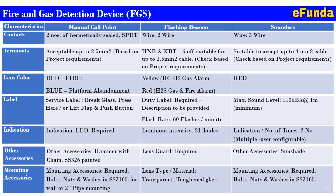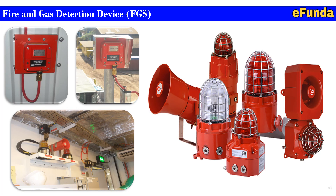We have now covered the details of manual call point, flashing beacon, and sounder with their characteristics. Now we will see some typical installation examples. In the first photograph, one can see the manual call point installation for indoor service. The second photograph shows outdoor installation. In the third photograph, flashing beacons and sounders are installed so as to have visibility from a distant point, so that the operator will be aware in case of any emergency or unforeseen event.